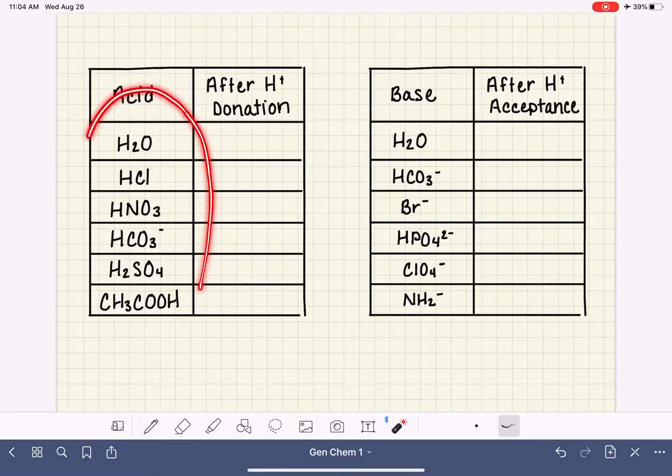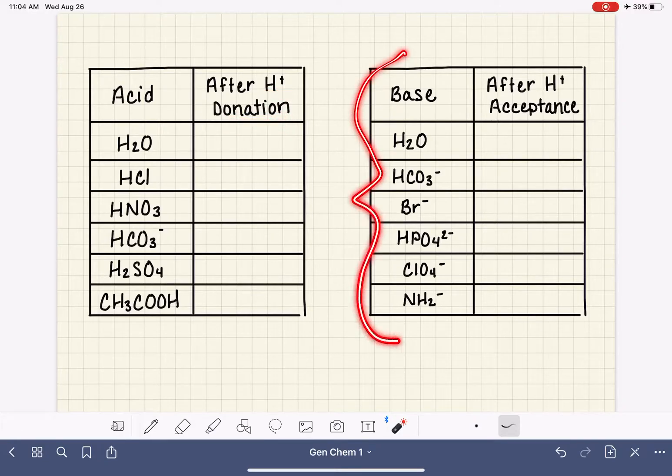Here are six molecules that can function as acids. In this exercise, we are going to predict the formula of the molecule that results after each one of these acid molecules donates an H+. And then we're going to do a similar thing for some bases. This exercise is going to help us get ready for predicting the products of acid-base reactions.